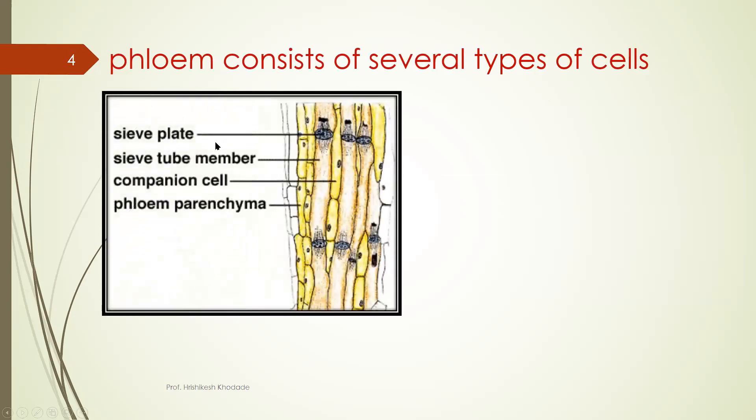So here is beautiful diagram showing that sieve tube member, companion cell, phloem parenchyma, sieve plates. So sieve plates are those regions where two sieve elements are connecting.